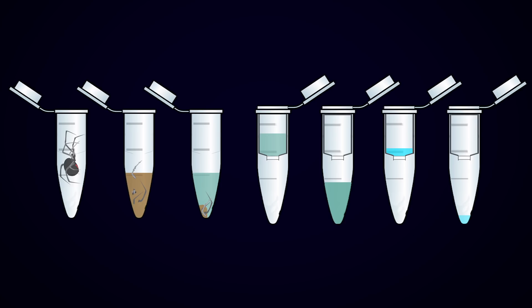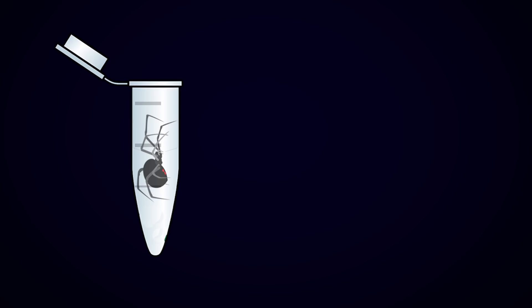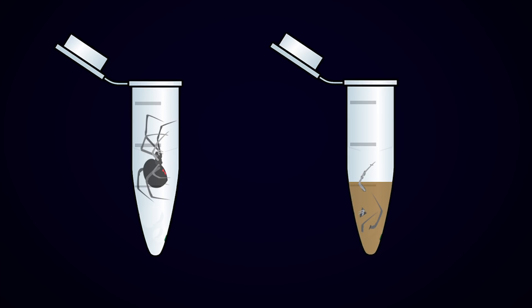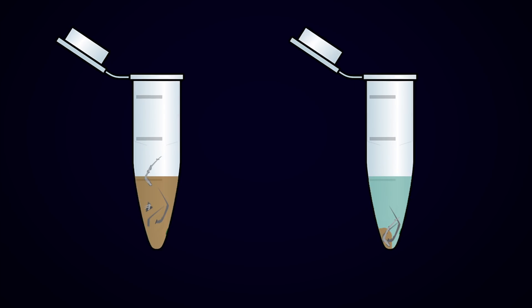All of these extractions work on a similar series of steps. First we get the thing we want to extract DNA from, and then make it into a sort of paste and add a salty, soapy solution to it. This pops open all the cells so the DNA is floating around in the salty water. We then remove as much of the debris as we can, be it bits of broken cells, or a leg, or whatever else.